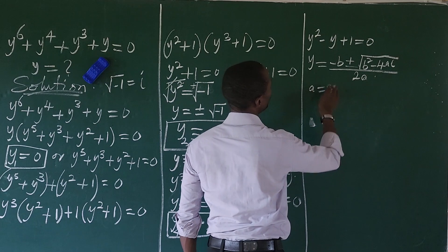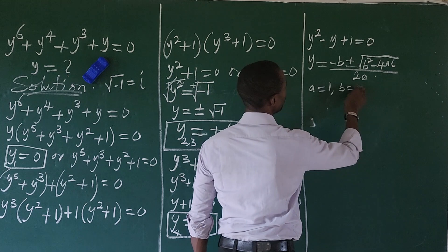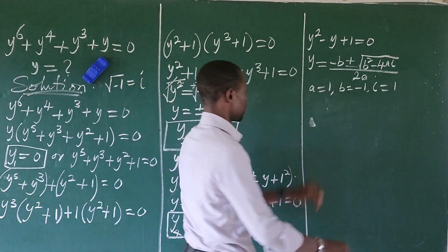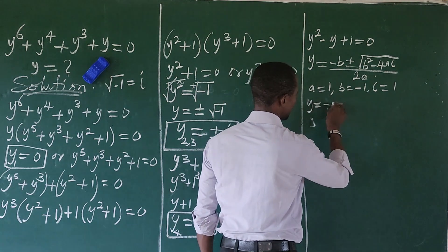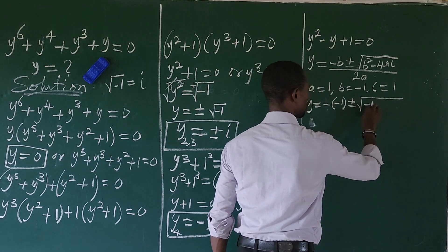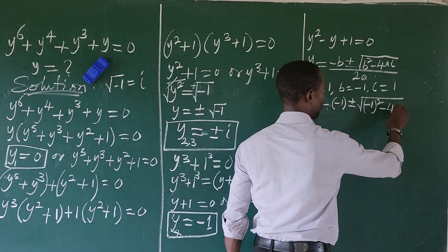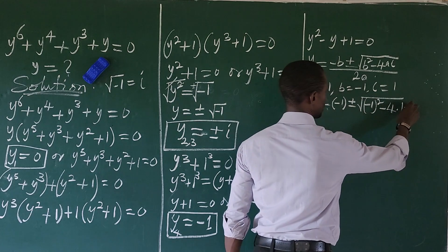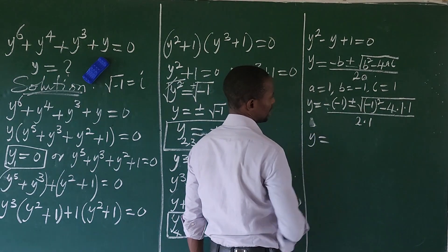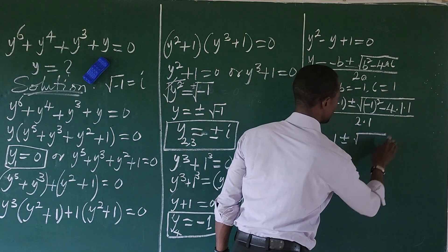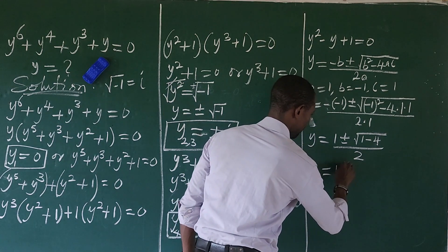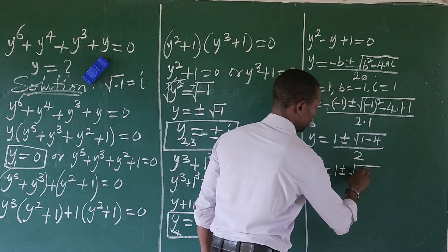Using the quadratic formula: y = [−b ± √(b² − 4ac)] / 2a. Here, a = 1 (coefficient of y²), b = −1 (coefficient of y), and c = 1 (constant term). Substituting, we get y = [−(−1) ± √((−1)² − 4·1·1)] / 2, which simplifies to y = [1 ± √(1 − 4)] / 2 = [1 ± √(−3)] / 2.